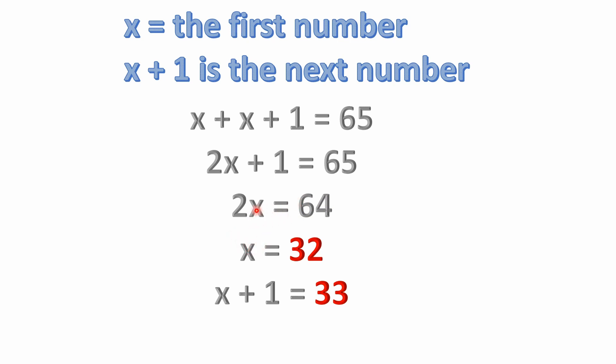All right, well what does that give us? Well you divide both sides by 2. That gives us x equals 32. Well, x plus 1 is 33. And you can verify that by adding these two together. 32 plus 33 equals 65. So using algebra, this is how we would solve this problem.